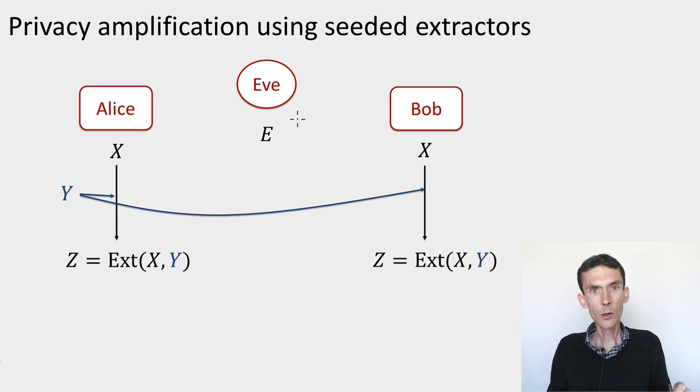So let's imagine that we have a strong seeded extractor. Let's see how this can be used in order to solve the task of privacy amplification that we introduced in the previous module. So if you remember this task, the setup was that there's a string X.